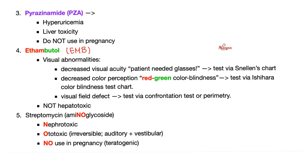Next, pyrazinamide: side effects include hyperuricemia and liver toxicity — try not to use in pregnancy. Ethambutol — with the E — causes eye problems with the E, such as red-green color blindness and decreased visual acuity. On the bright side, it is not very hepatotoxic.